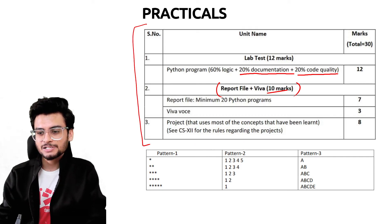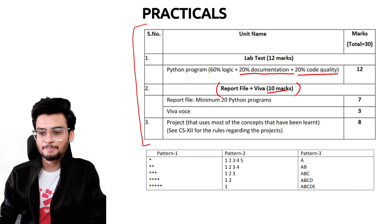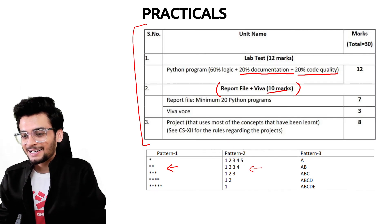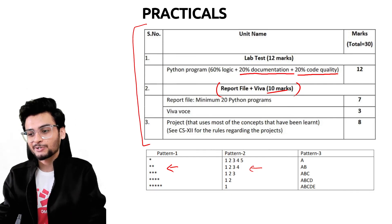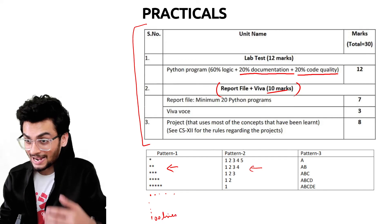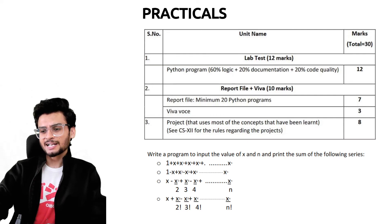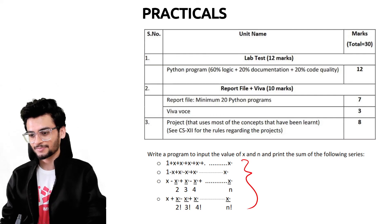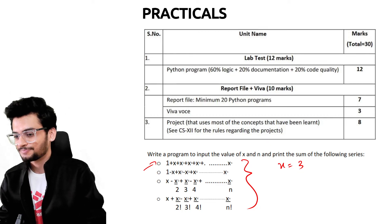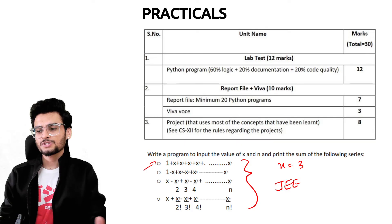All these practicals will be covered on this channel — CS Made Easy. For example, you might be asked to recreate a pattern or print one. In computer science, if you need to print 100 lines, you can't do it manually — that's where coding and Python help you. Another type of question could ask you to solve an expression, like given x = 3, use Python code to solve it directly. This is useful if you're preparing for JEE as well.